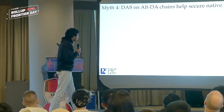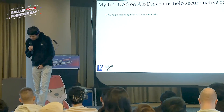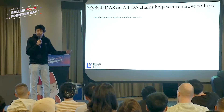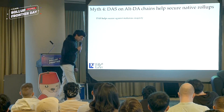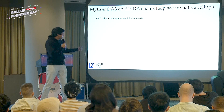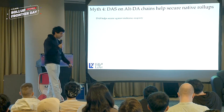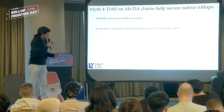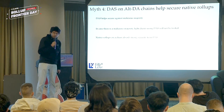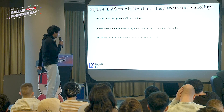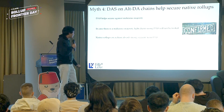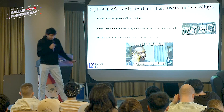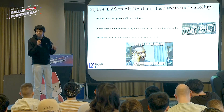Here's another myth — and this one may actually be true. Myth: data availability sampling on alternative DA chains helps secure rollups built natively on those chains. What DAS does is help secure against a malicious majority of validators. If you build a native rollup on a chain which performs data availability sampling, light clients using DAS will not be fooled. So if you build a native rollup on a DA chain, you actually absorb the strong security that DAS gives you. This myth is confirmed — DAS on a DA chain does secure native rollups. It doesn't secure Ethereum rollups. The only way to secure Ethereum rollups is to use the Ethereum data availability layer.